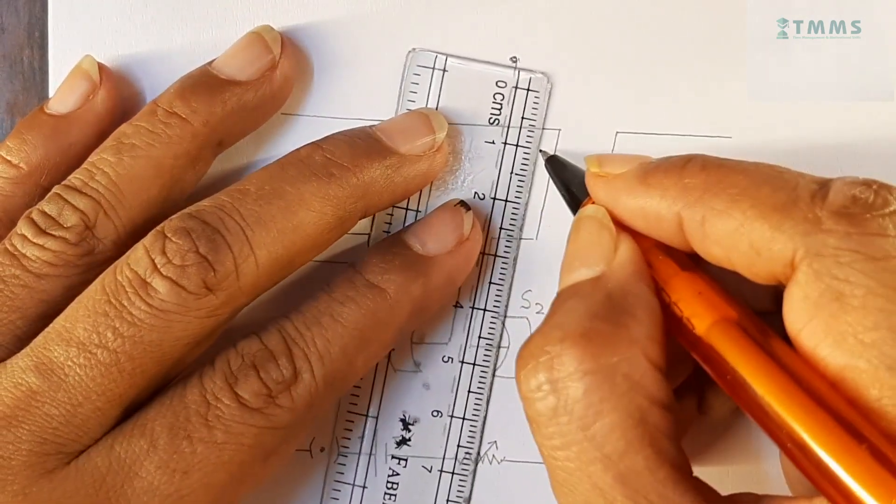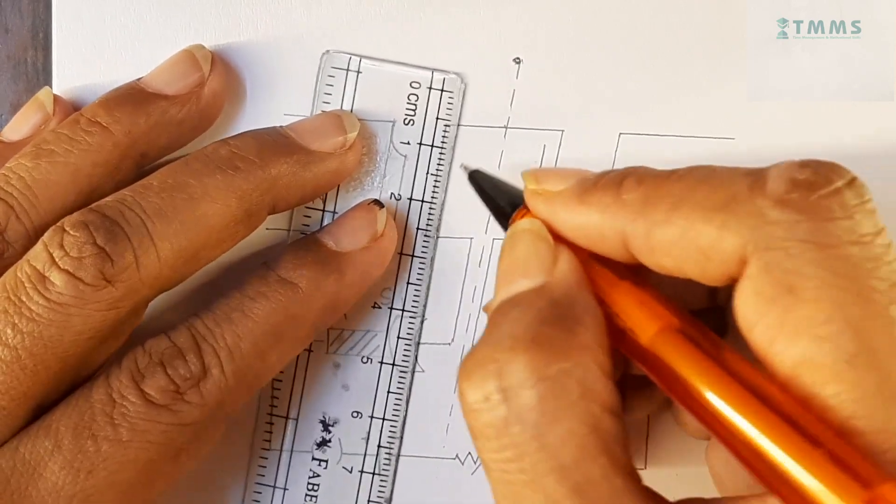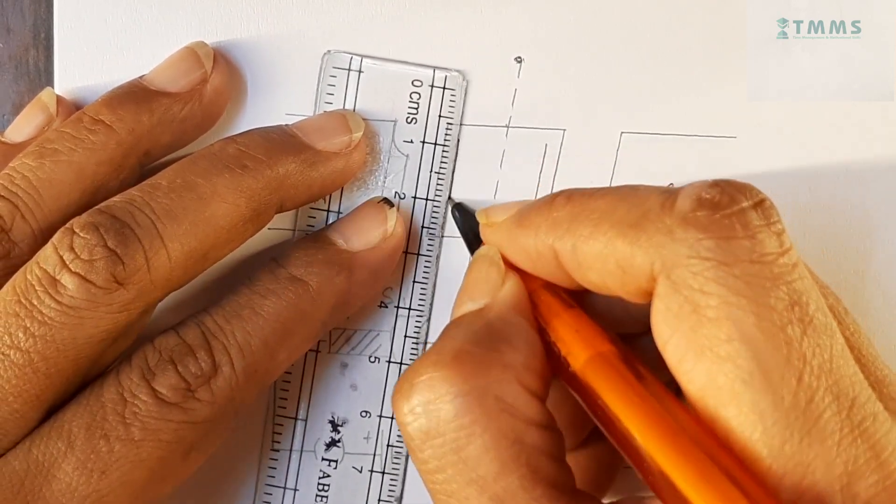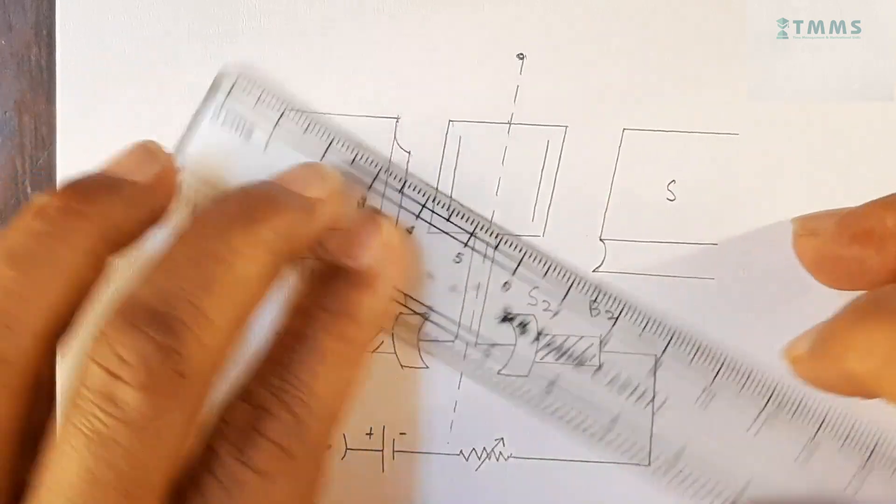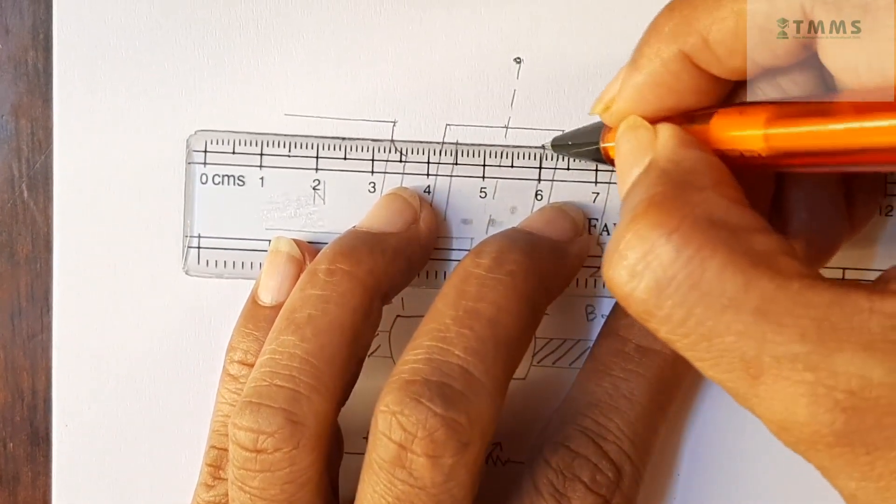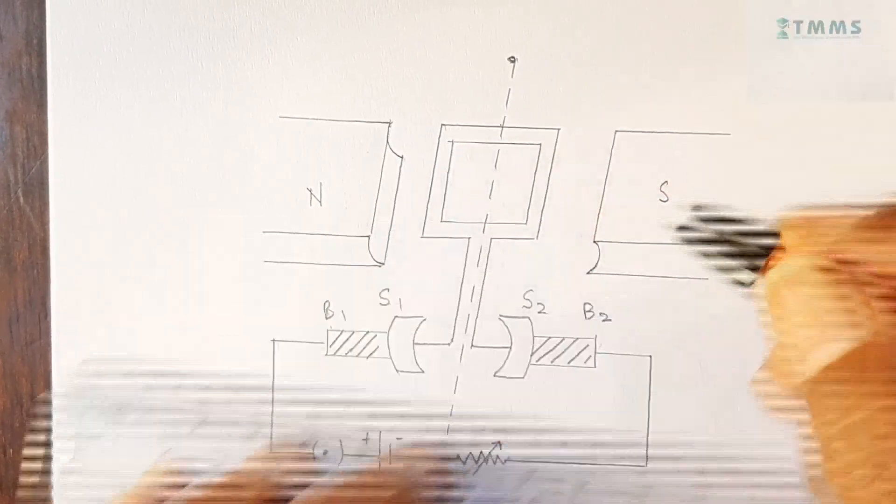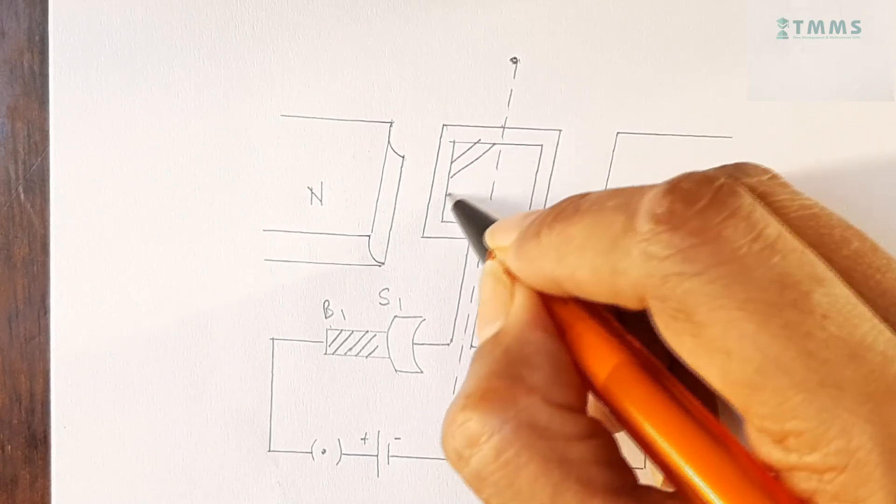And now, lastly, we have to show the iron core. That is the soft iron core. Which is laminated soft iron core. And we just shade it like so.